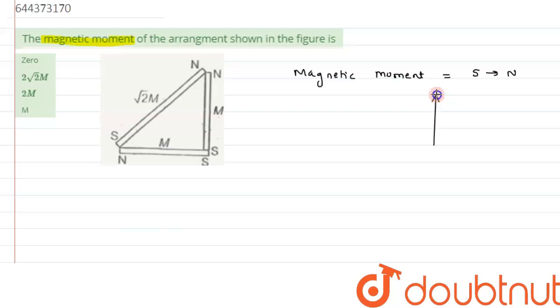So this is for this magnet and similarly for this magnet we can draw the direction of dipole moment. As we can see, both are perpendicular to each other, both magnets are perpendicular to each other.